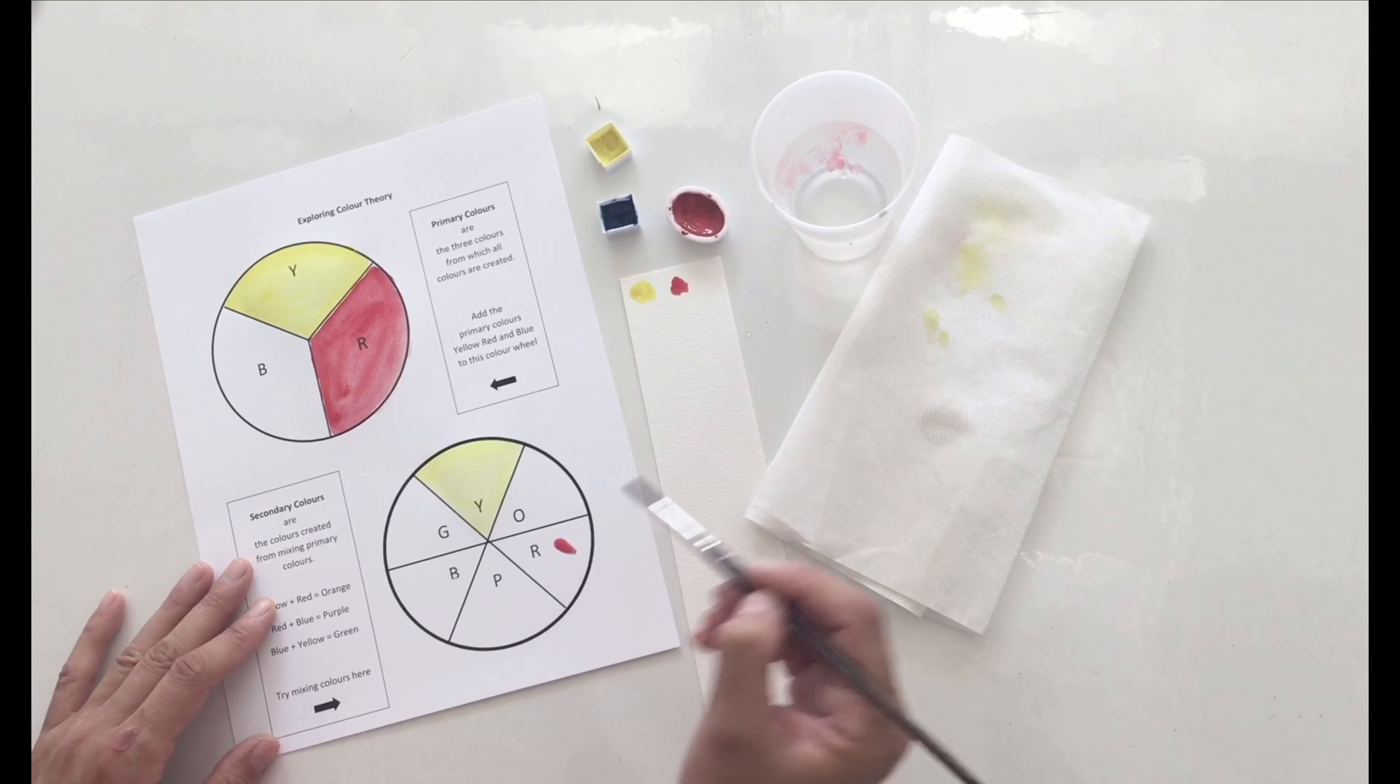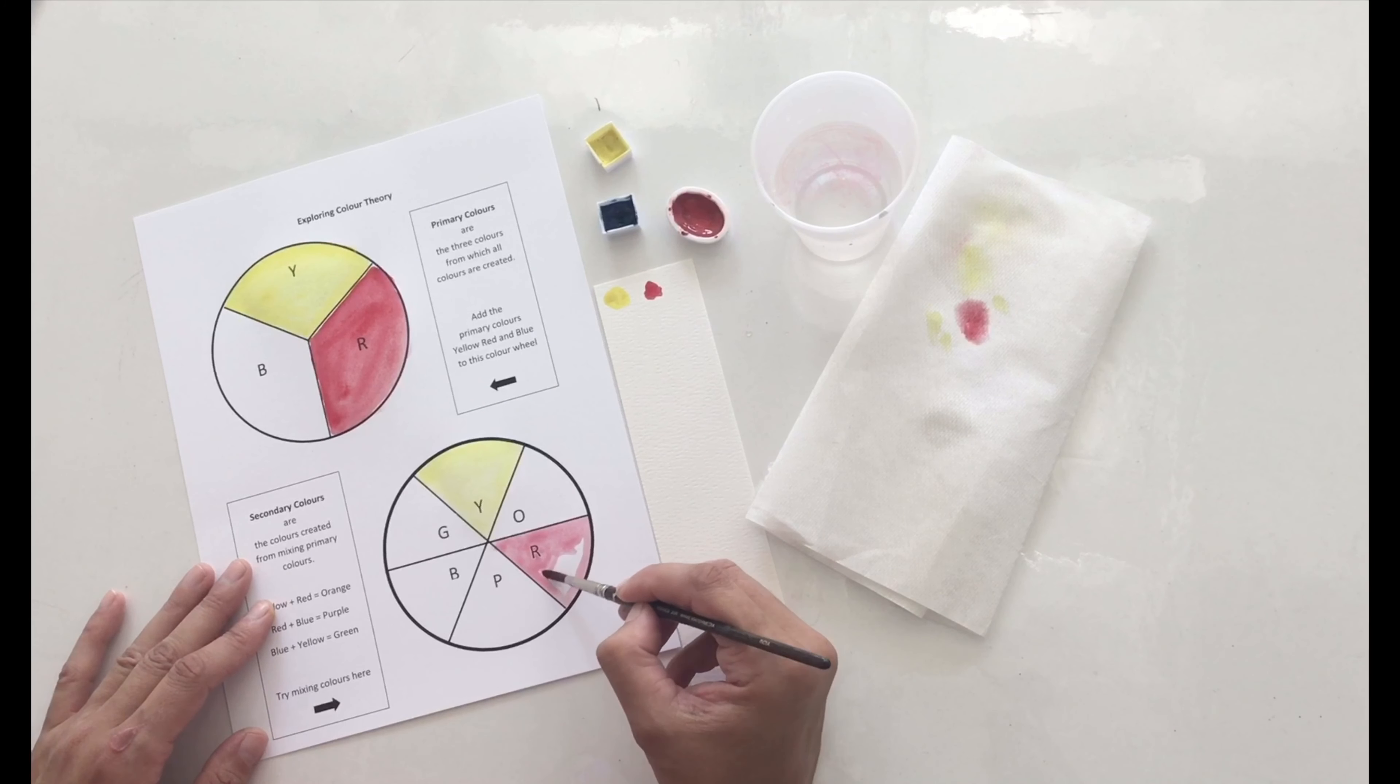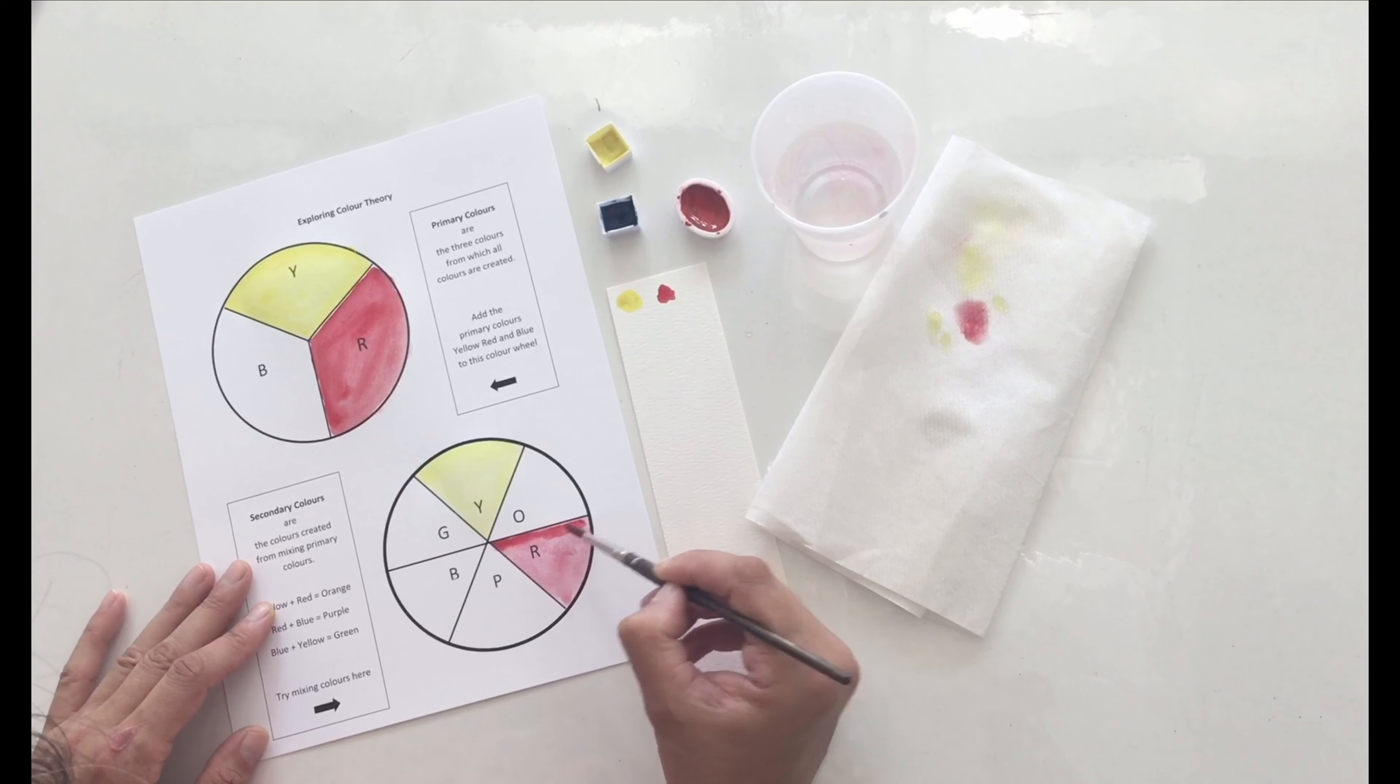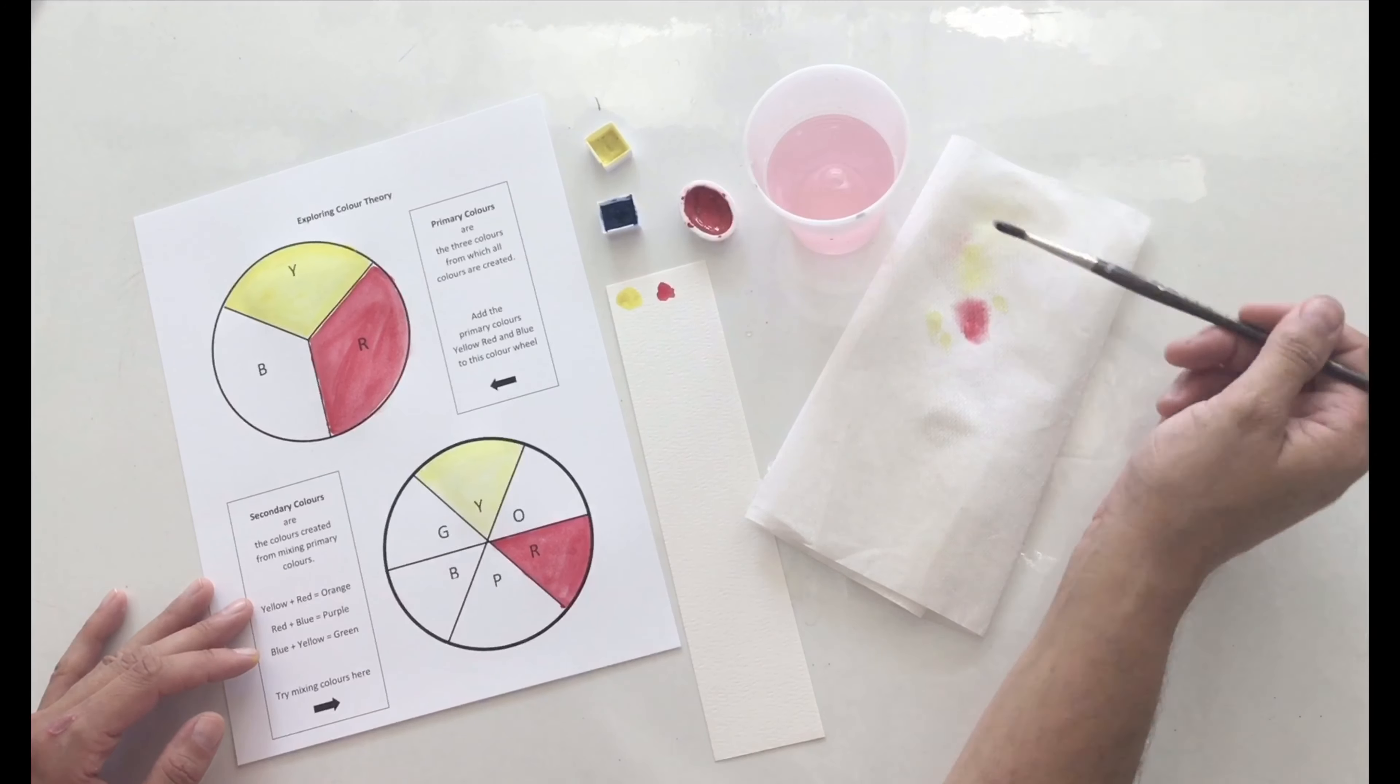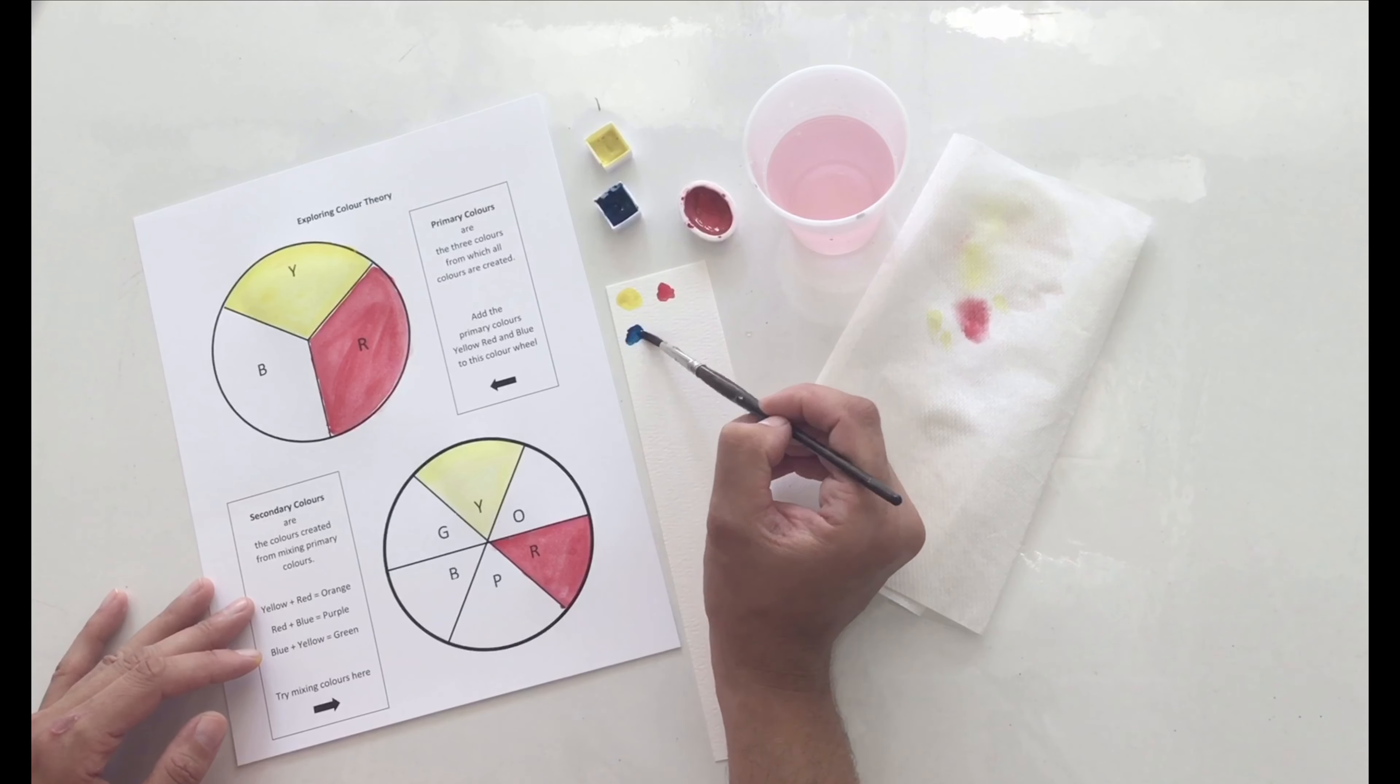And I'm going to do the same thing down on the secondary color wheel, filling in those primary color slices. I think I would like to see just a little more bold color, so I'm adding a little more paint to my red on the primary color wheel, and I'm going to rinse my brush and get started with the blue.